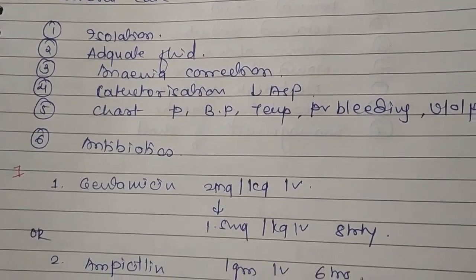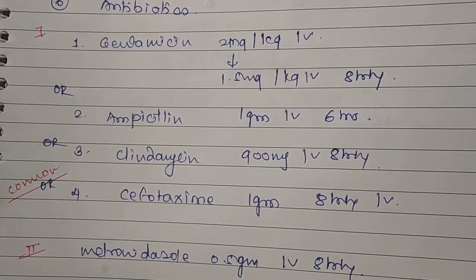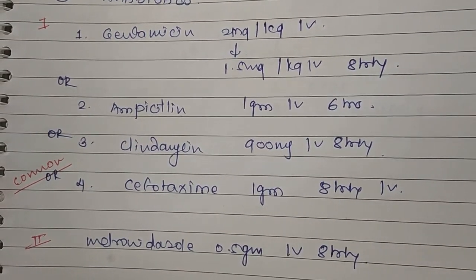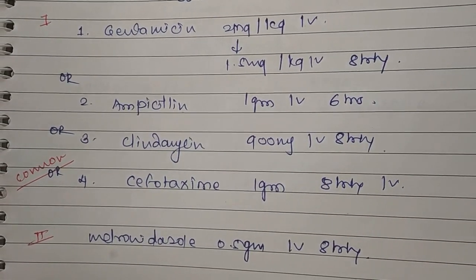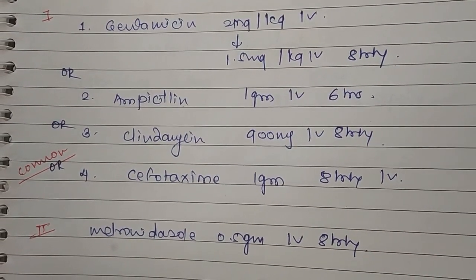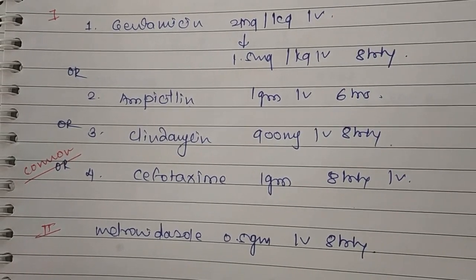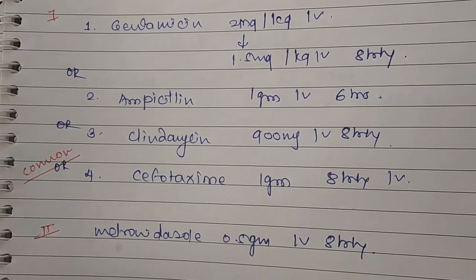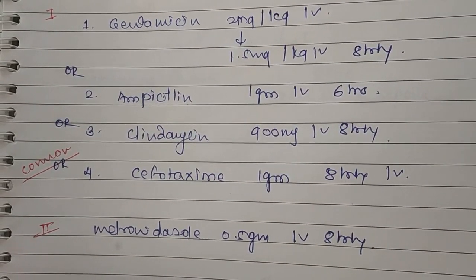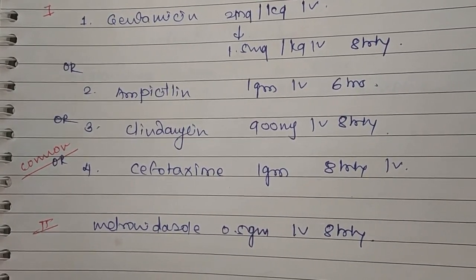Antibiotic therapy options include: Gentamicin 2 mg/kg IV as a stat dose, then 1.5 mg/kg IV 8-hourly; Ampicillin 1 g IV 6-hourly; or Clindamycin 900 mg IV 8-hourly. The most commonly used is Cefotaxime 1 g IV 8-hourly. A second agent is Metronidazole 0.5 g IV.